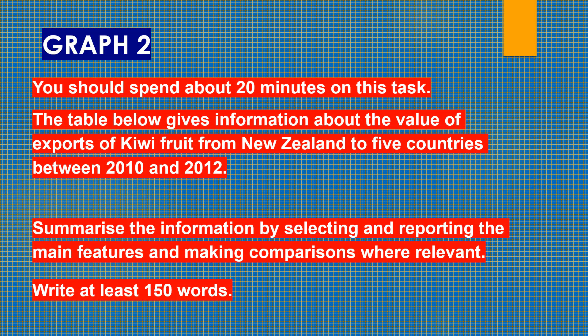Let's take a look at graph 2. You should spend about 20 minutes on this task. The table below gives information about the value of exports of kiwi fruit from New Zealand to five countries between 2010 and 2012. Summarize the information by selecting and reporting the main features and make comparisons where relevant. Write at least 150 words.